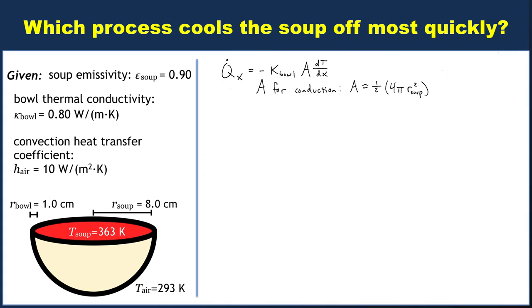So the area for conduction, I assumed that this was a hemispherical bowl just to make our lives a little bit easier. We're conducting to the inner part of the bowl, so the area should be half the total surface area of a sphere, so one half times 4πr², and the radius here is the radius of the soup. That's where the conduction is occurring. It's not on the outside of the bowl. We're going to assume that the outside of the bowl is still at room temperature.